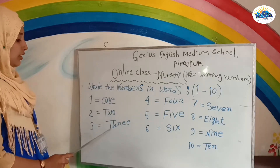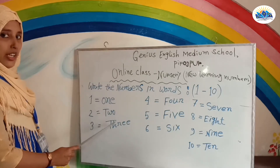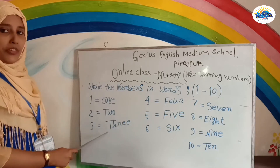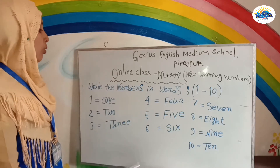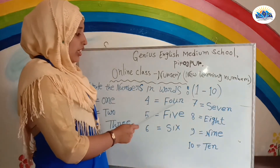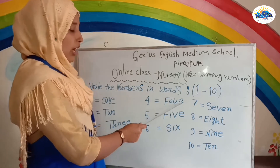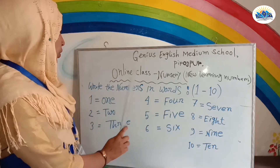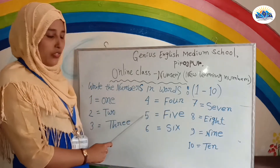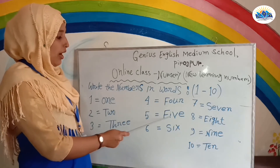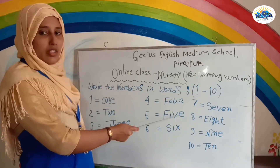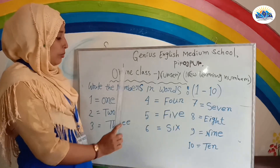Number three: G-A-S-R-W. Three. Number four: F-O-U-R. Four. Number five: F-I-B-E. Five.